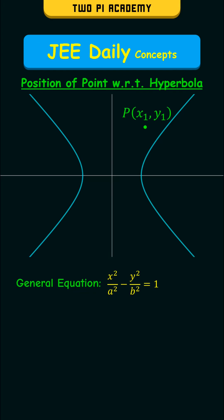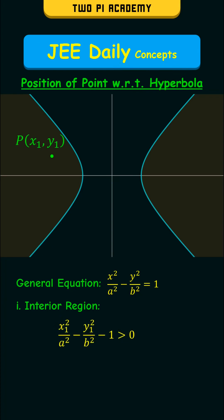In the first case, the point will be in the internal region, which is the following. And in this case, x1 square by a square minus y1 square by b square minus 1 will be greater than 0.